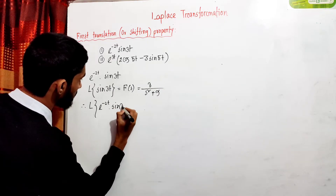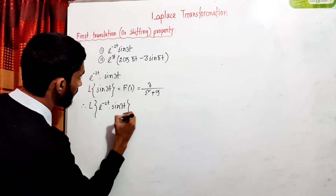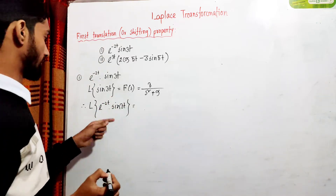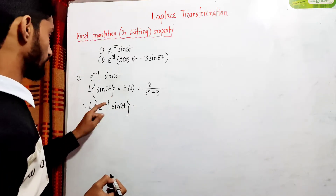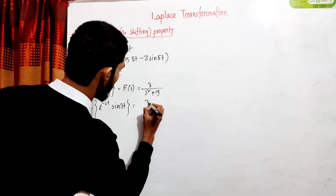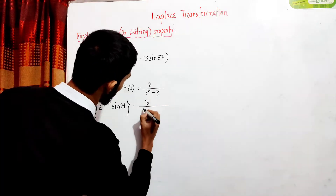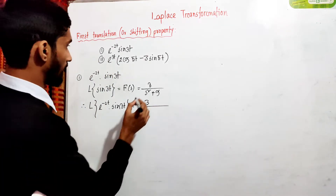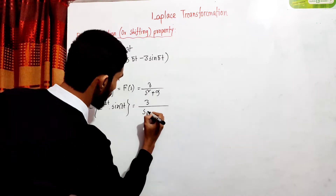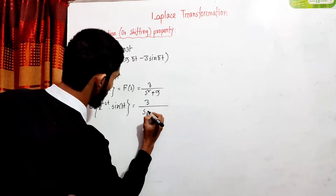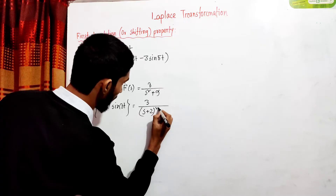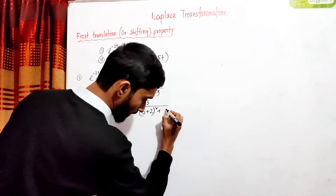Now applying the first shifting property, the Laplace transform of e^(minus 2t)·sin(3t) replaces s with s minus A, where A equals minus 2. So we substitute s with (s plus 2), giving us 3 divided by (s plus 2) squared plus 9.